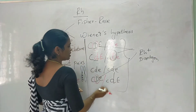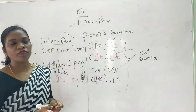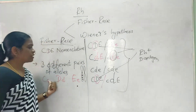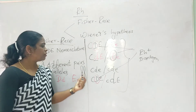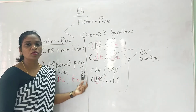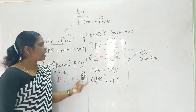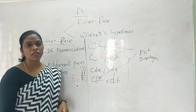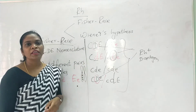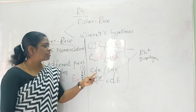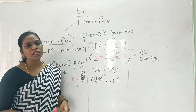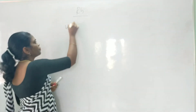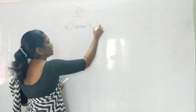When there is an absence of capital D, it results in the formation of an Rh negative blood group. To summarize Fischer and Reiss: three different pairs of alleles are present at three different loci in a homologous chromosome; wherever capital D is present the blood group is Rh positive, and wherever small d is present the blood group is Rh negative. The next hypothesis is Wiener's hypothesis.